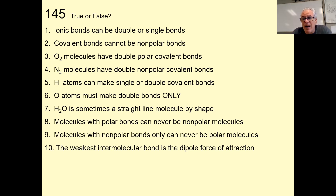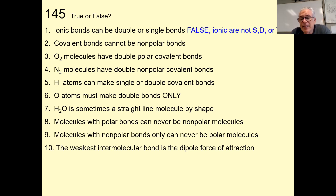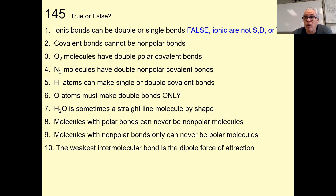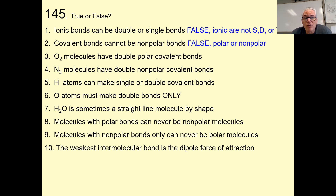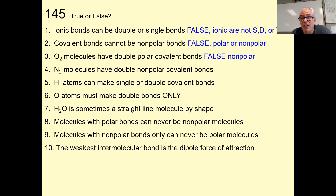True and false: ionic bonds can be single or double bonds — absolutely false. Ionic bonds are positive and negative and they just become ionic. Covalent bonds cannot be nonpolar — false. Anytime you have two atoms with the same electronegativity, there's no difference — that makes them nonpolar. Oxygen has double polar covalent bonds — no, oxygen has double nonpolar covalent bonds because there's no difference in electronegativity between the two oxygen atoms.